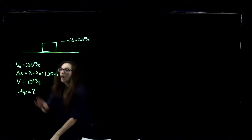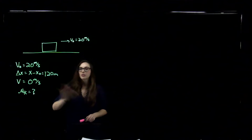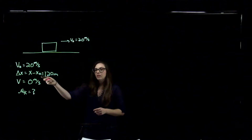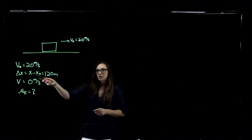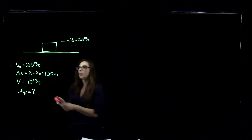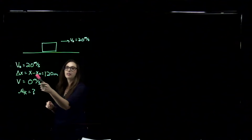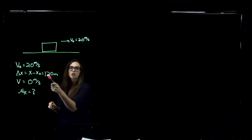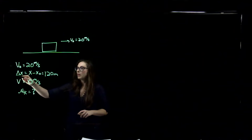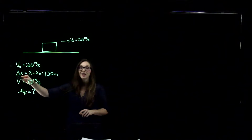I've written down all of my knowns. The distance that we slide is 120 meters, so x-final minus x-initial equals 120 meters — sometimes we call that delta x.